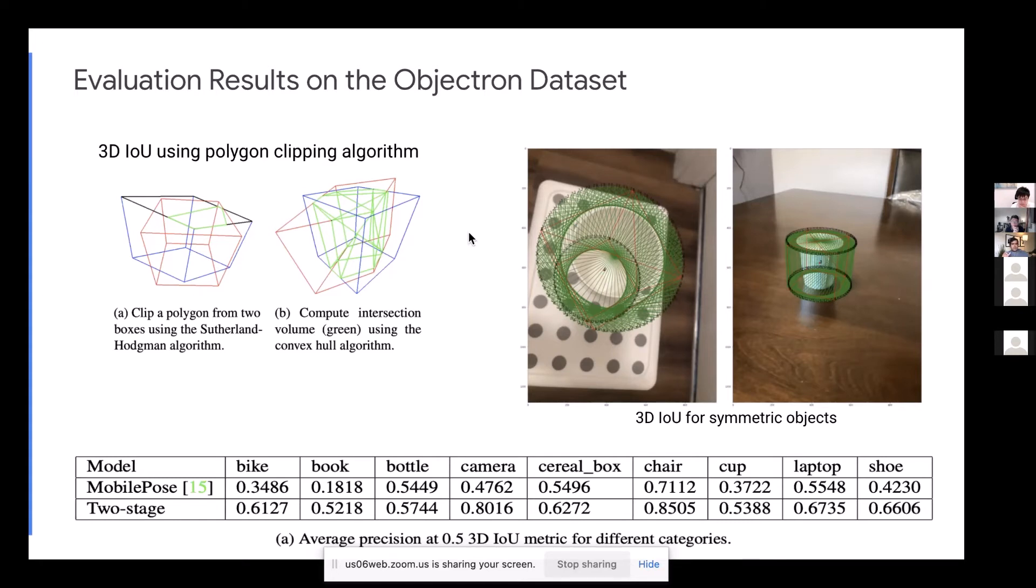This algorithm has some caveats for symmetric objects because with symmetry, you cannot really estimate that symmetric axis very well. For example, when you look at a cup, what is the front face of the cup? It is undefined in this case. And for these cases of symmetric objects, we just rotate it and get multiple instances and we pick the one that produces the minimum. So with this 3D IOU, for example, you can see what would be the baseline results for different models across different categories. And these results, at the time that we are talking at this ICCV, this is not the state of the art anymore. Some new folks have come up with better models that would beat these numbers.